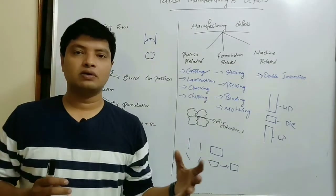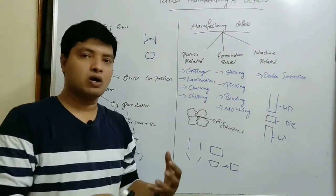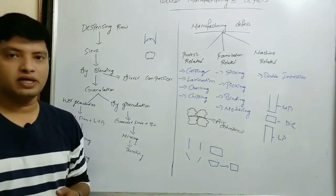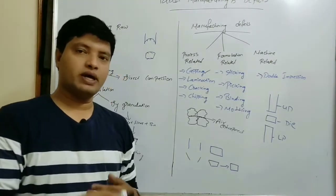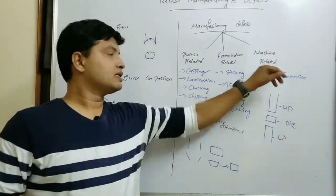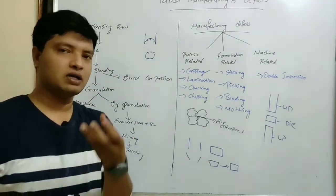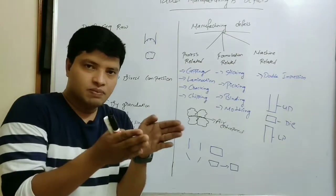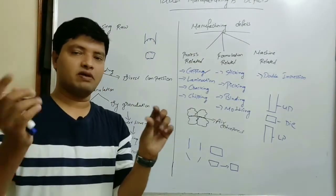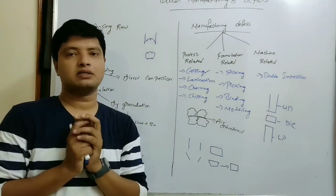Binding means the tablet will not come out from the die wall at all — it stays inside. Process related: if granules are not dried properly and are wet, they have a more cohesive nature and will bind to the die cavity. Formulation related: too much binder with improper drying causes the tablet to stay bound. Machine related: if the die cavity is too small relative to the amount of powder going in, the tablet gets stuck. To avoid binding, use dies of proper size.